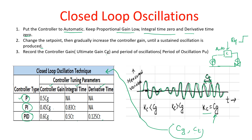The problem with this method is that it forces the process to oscillate. There are many processes where the operator does not want oscillation at all, so this method cannot be used in those cases. This is a significant drawback of the closed loop oscillation technique.